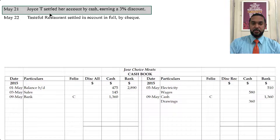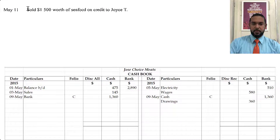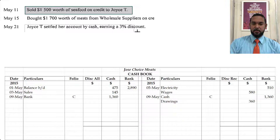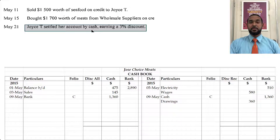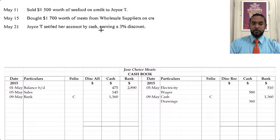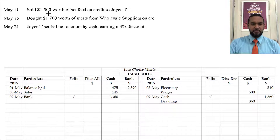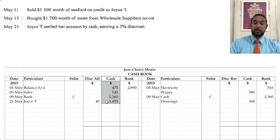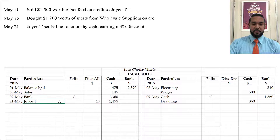On the 21st of May, Joyce T settled her account by cash, earning a 3% discount. She's paying us cash, so we go on the debit side to record that receipt. The 3% is a cash discount, so it goes under the discount allowed column. We find 3% of $1,500, which is $45, and subtract that from $1,500, giving us $1,455. So under cash on the debit side, we see $1,455. Discount allowed is $45, and it came from Joyce T.